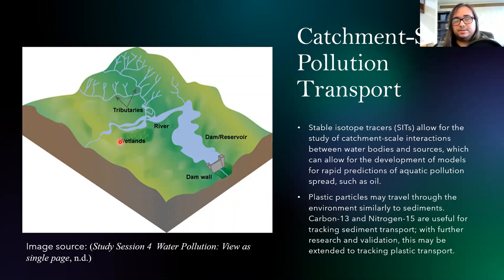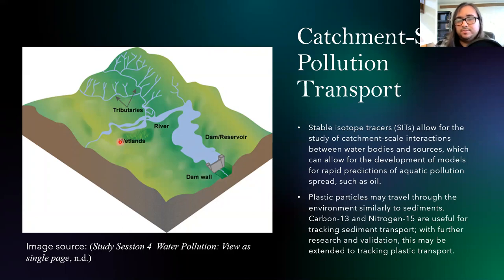In other ways, isotope tracers can help you determine how water bodies interact with each other and mix together. For example, at the confluence of two major rivers like the Columbia and the Willamette in Portland, taking measurements from upstream and then from downstream after they mix together lets you determine the specific areas where different water sources end up. By modeling this, if you identify a source of an aquatic pollutant like oil, you could rapidly determine where it's going to end up, which helps you mitigate harm much more quickly.